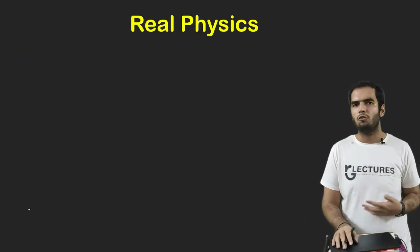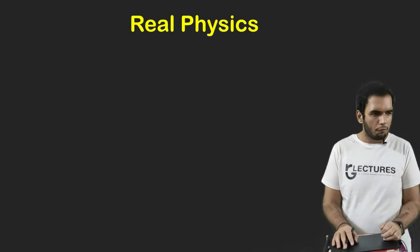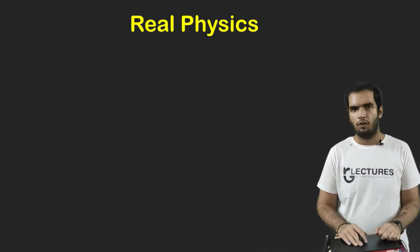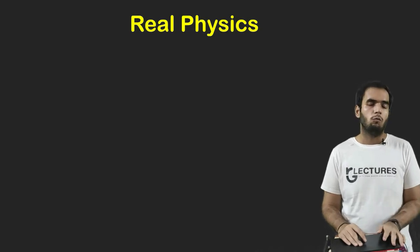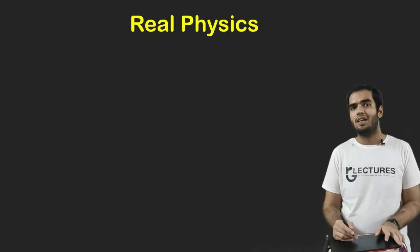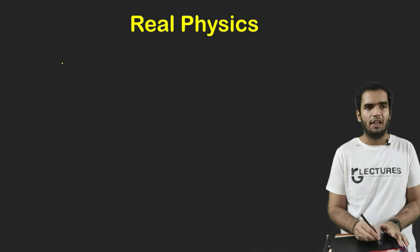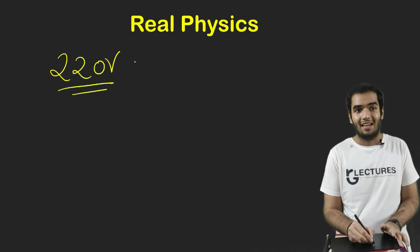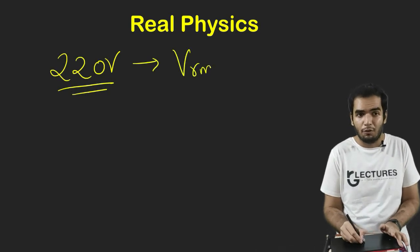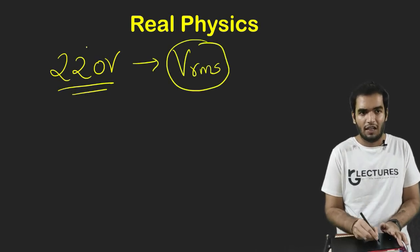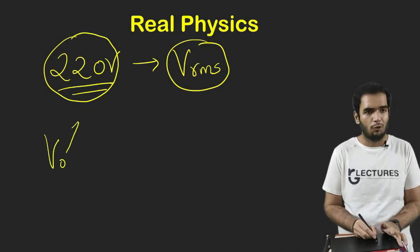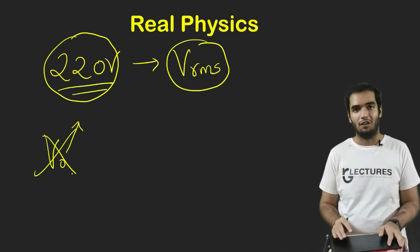Now, let's go further. Real physics, where we use RMS value. Of course, if we cannot measure anything, it becomes useless. So whatever voltage is which we are getting at our home in India, we say the voltage is 220 volt. Now, what is that 220 volt? That is V_RMS voltage.